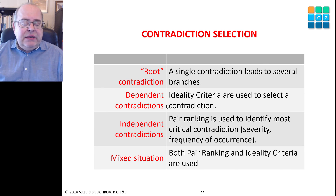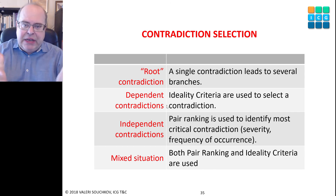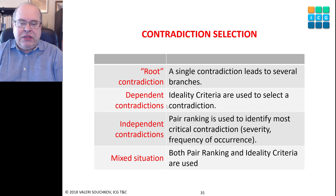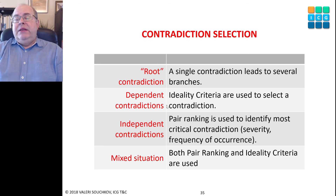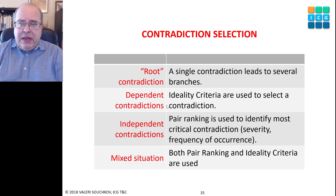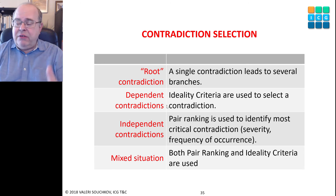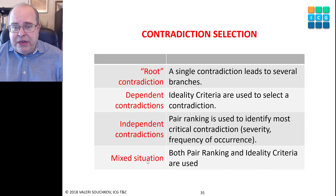Looking at all the contradictions, it doesn't matter which one to choose. But it's logical that rather than dealing with the CEO of the company, we better think about the high price of the package. There are ways — for example, creating monthly payment plans so the total price remains the same but each monthly payment is low, or combining the device with a consulting service to justify a higher price. I just want to mention that there could be several situations with contradictions: root contradiction, independent contradiction, and mixed situations.